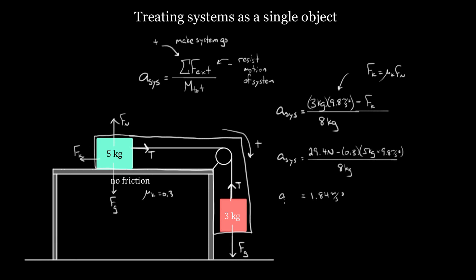This is less than our 3.68, and that makes sense — now there's a resistive external force trying to prevent the system from moving. But be careful: what I'm really finding here is the magnitude of the acceleration. If positive forces make it go and negative forces resist motion, I'm just getting the magnitude. Individual boxes will have that magnitude but may have positive or negative accelerations. The five kilogram mass accelerating to the right has positive 1.84, and the three kilogram mass accelerating downward has negative 1.84 meters per second squared.